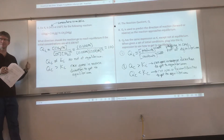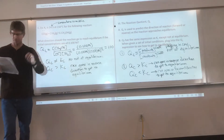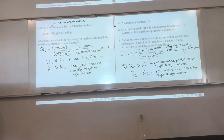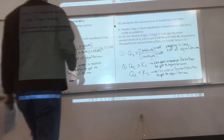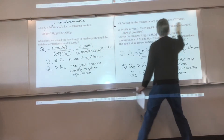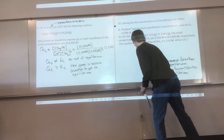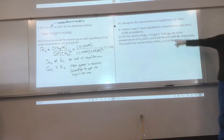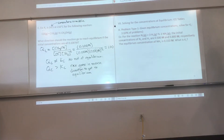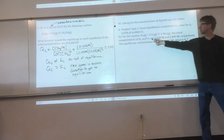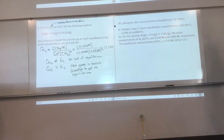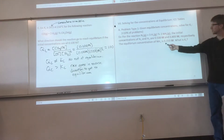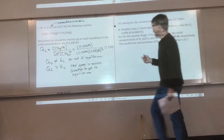Now we know Kc approximately, we know Qc. Now let's start solving problems—solving for concentrations at equilibrium. We'll be using what's called an ICE table. There are two types of problems. We'll start with the one where you are given equilibrium concentrations and solve for Kc.